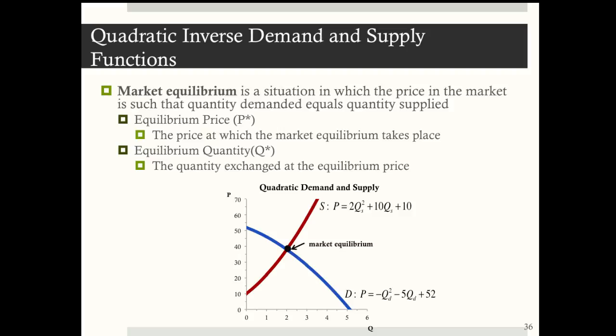In the graph below, market equilibrium occurs at the intersection of supply and demand. Our goal is to use math to figure out what P* and Q* are.